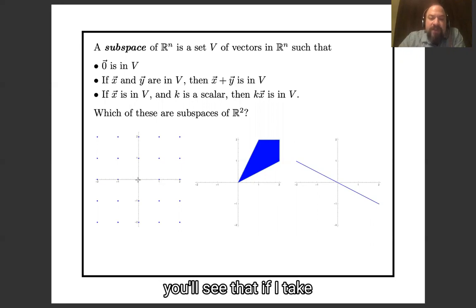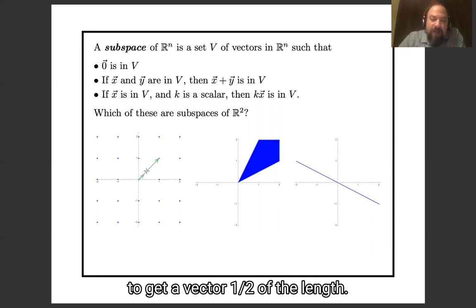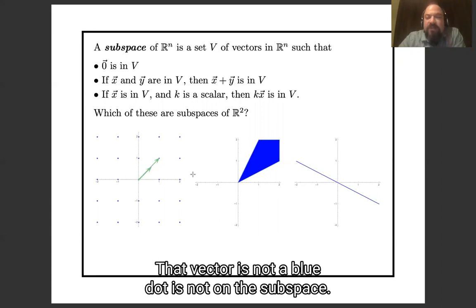If you look at the left picture, you'll see that if I take this vector and I rescale it by the scalar, say, one half, to get a vector of one half the length, that vector is not a blue dot, it's not in the subspace.